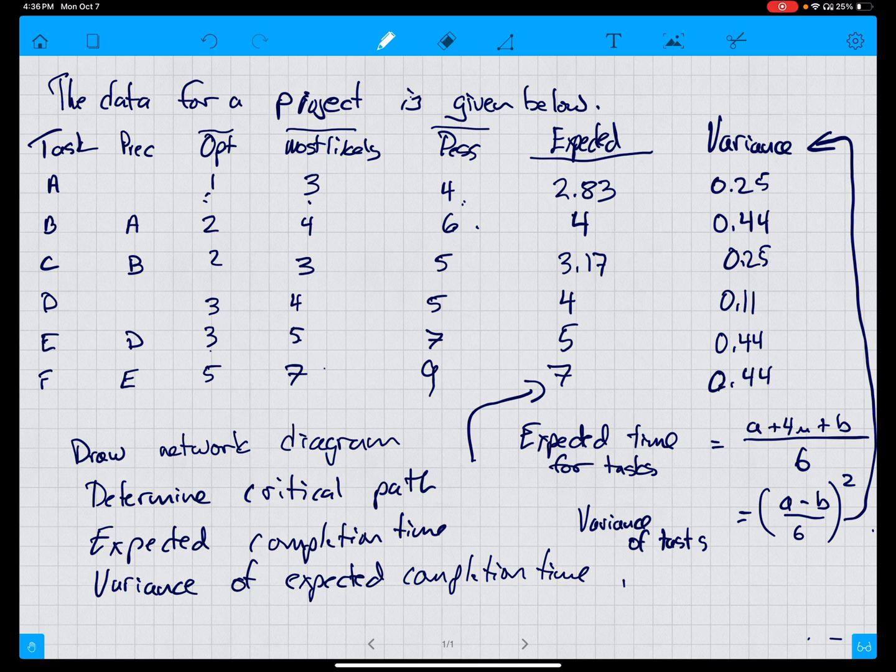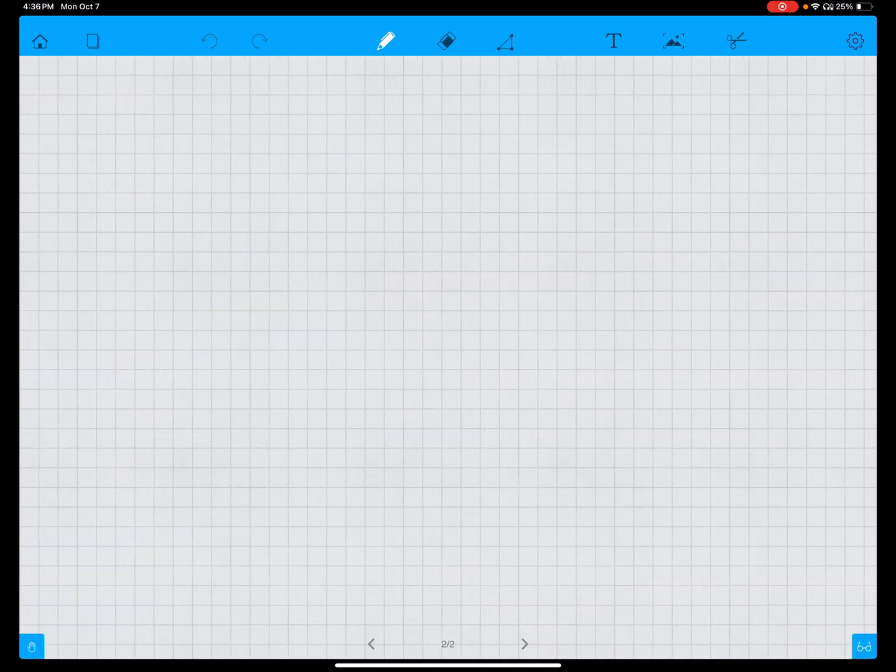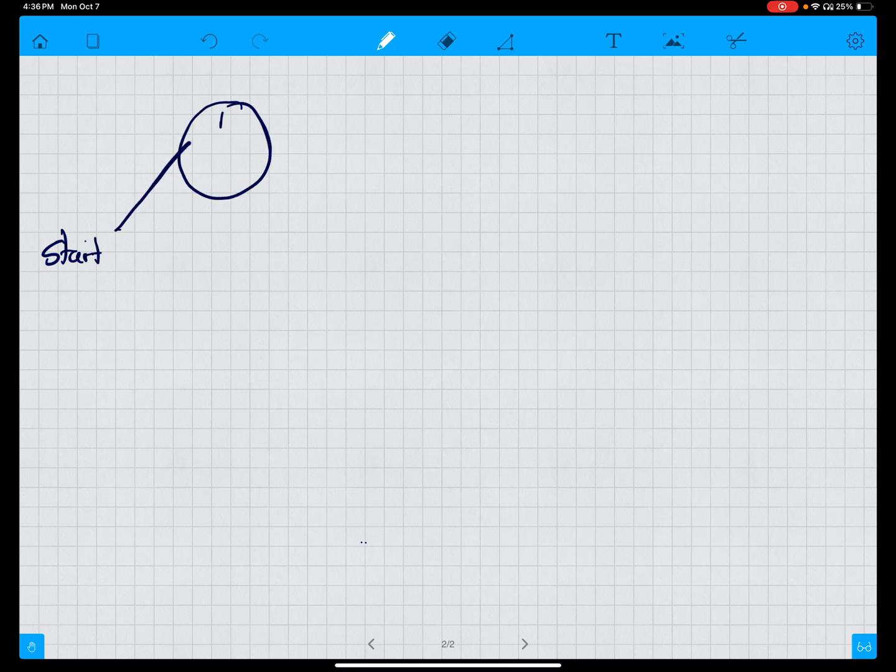So now we have the expected times and the variances of expected times. We can then go ahead and draw the network. We're going to draw the network start. A has no predecessors, and the expected time is 2.83. B has no predecessors, and the expected time is 4.